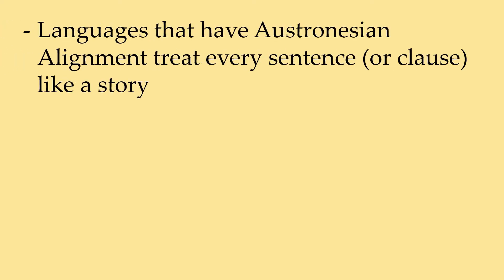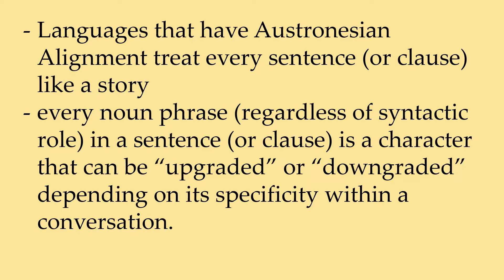First things first: languages that have Austronesian alignment treat every sentence like a story. Every sentence like a story. The man bought a diamond — there are two characters, the man and the diamond, and there's the buying. Depending on which one is more important in the story, you emphasize or de-emphasize the character. Every noun phrase, regardless of its syntactic role in a sentence or clause, is a character that can be upgraded or downgraded. In Tagalog it'll be like ng and ang — which one is ng and which is ang in the sentence.